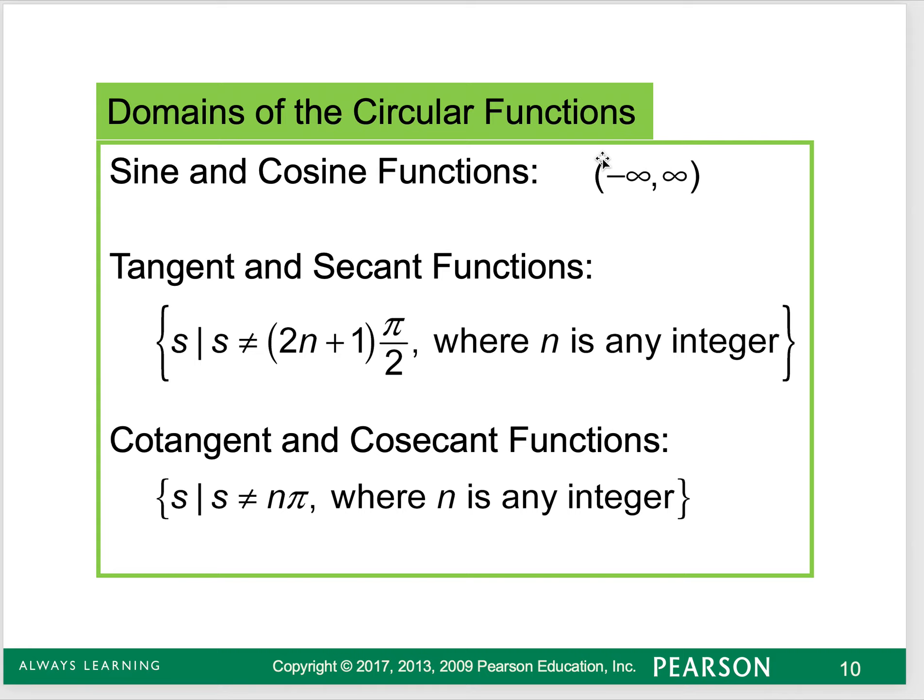Y over x is my tangent value. Anytime that x value is 0 on the unit circle, which occurs at a couple points, it's going to be undefined. So that's why those domains are not all real numbers. The same is true with cotangent and cosecant. Anytime that denominator is 0, we're not going to be able to find the answer.